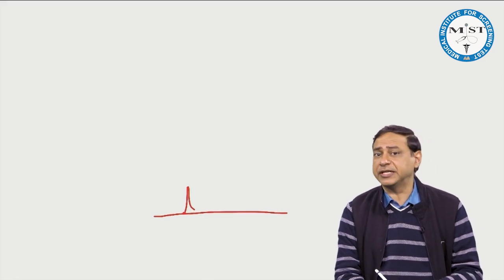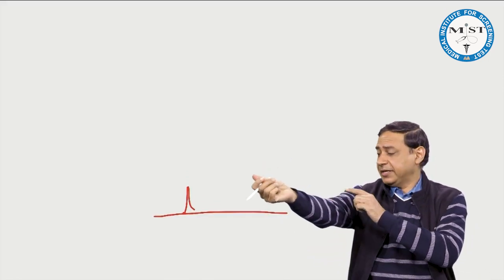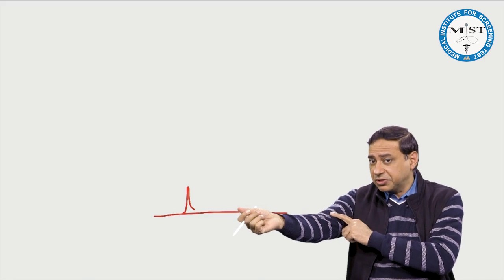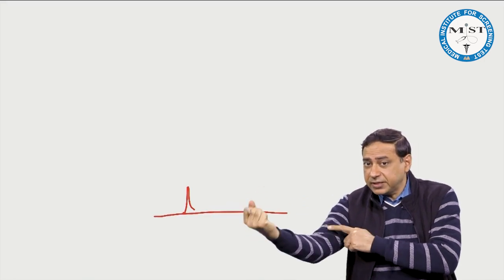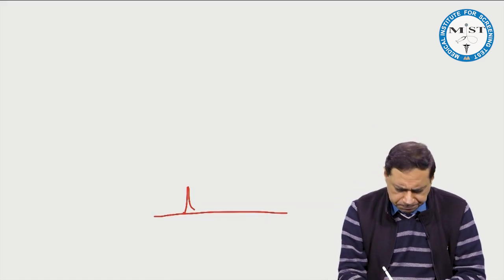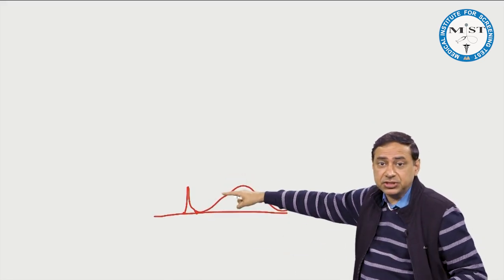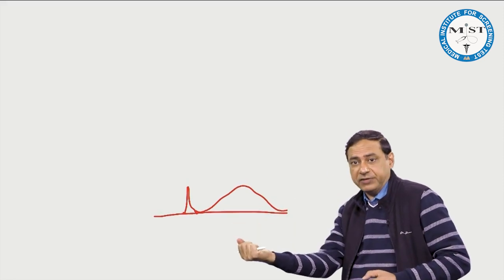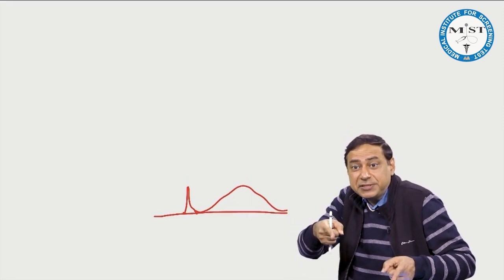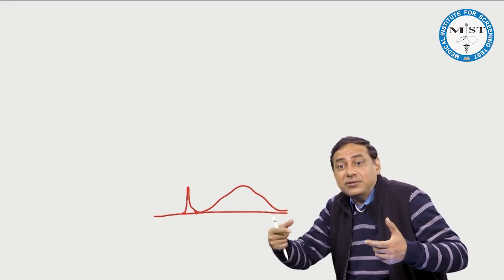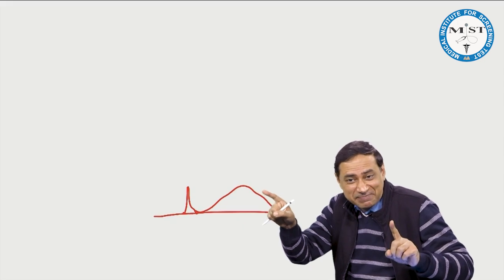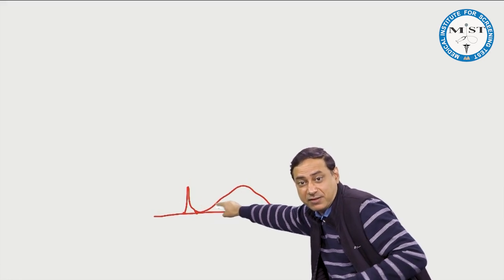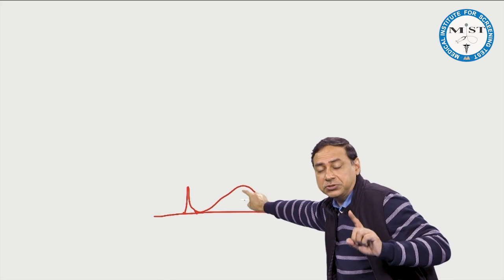If I give one action potential to the skeletal muscle, it will contract — one twitch. One action potential leads to one twitch: one contraction followed by one relaxation. If I give a sequence of action potentials, you get a continuous state of contraction, which is known as tetanus.